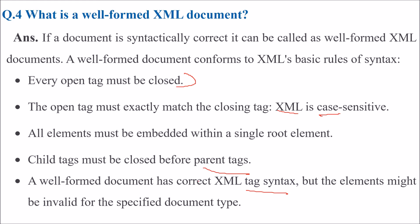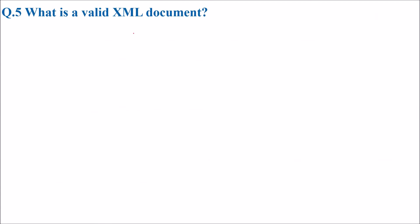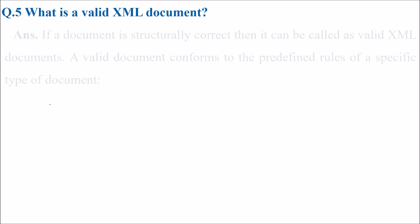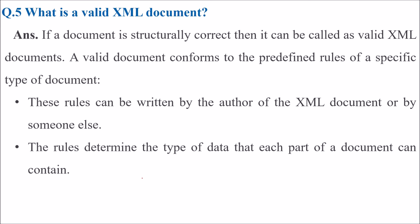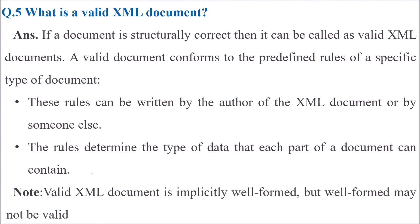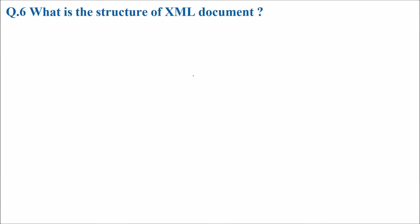A well-formed document has correct XML tag syntax, but the elements might be invalid for the specified document type. So what is a valid XML document? If a document is structurally correct, it can be called a valid XML document. A valid document conforms to rules that are predefined for a specific type of document. These rules can be written by the author of the XML document or someone else, and determine the type of data that each part of a document can contain. A valid XML document is implicitly well-formed, but well-formed may not be valid.